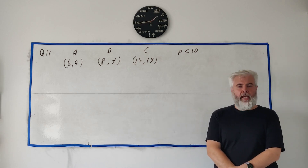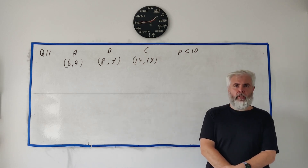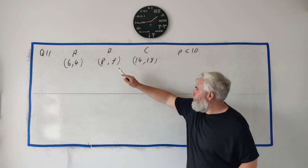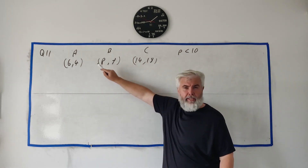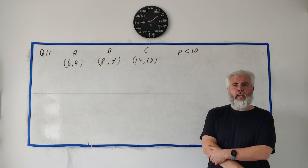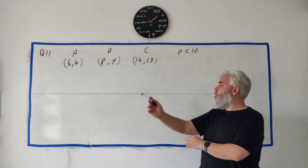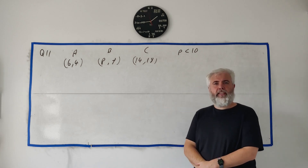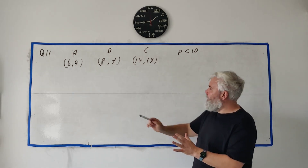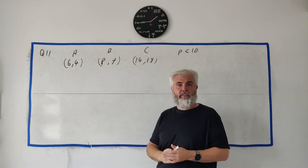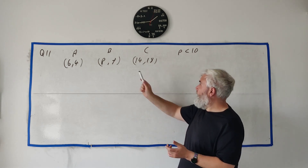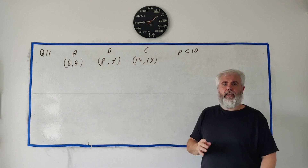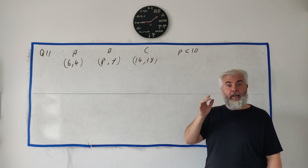In question 11, the last question in this paper, they give us three points A, B, and C with one number missing — p — in point B, and they give us a clue that p is less than 10. They also tell us that the line AB is perpendicular to the line BC, and with those clues they ask you to find the value of p.